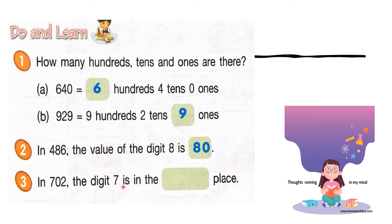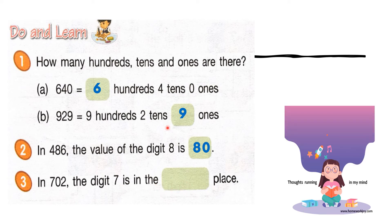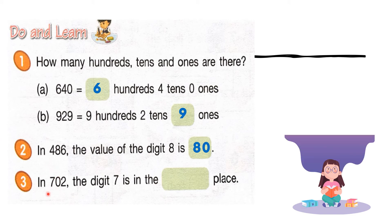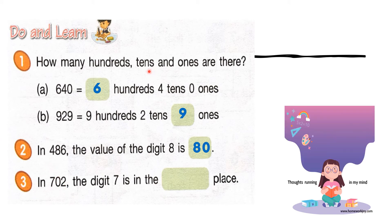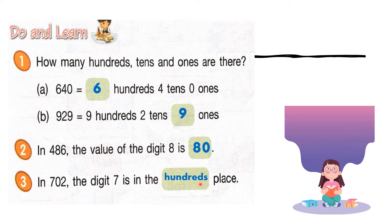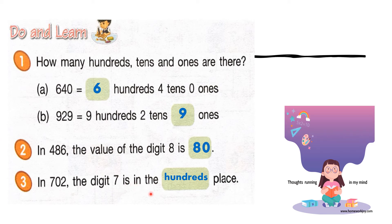The digit 7 — look at the blank: what place is it in? Is it 1s, tens, or hundreds? Look at 207. The digit 7 is in the ones place? No — is it 1s, tens, or hundreds? Your answer is hundreds. This digit 7 is in the hundreds place.